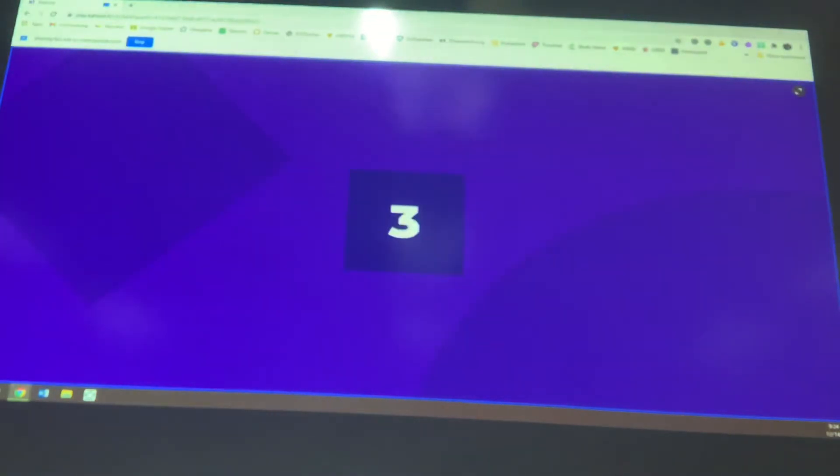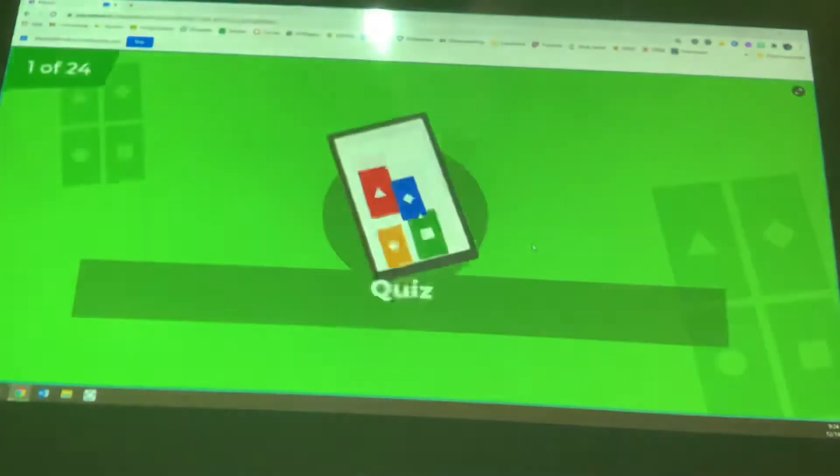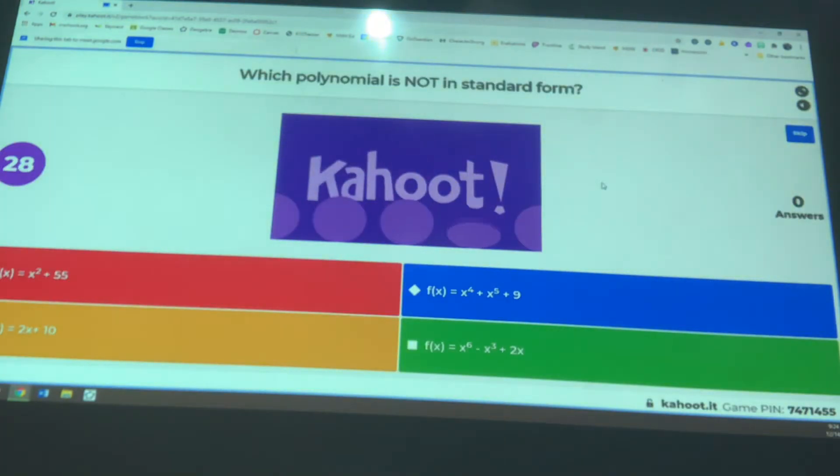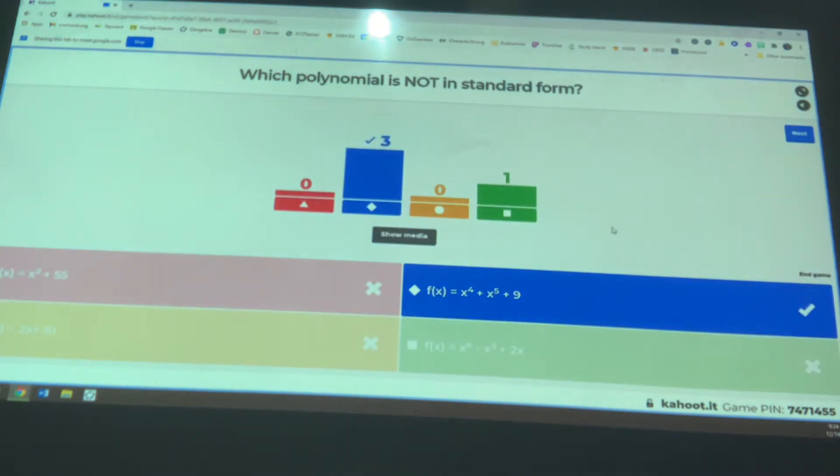Alrighty. This is review of polynomials. First question, which polynomial is not in standard form? Which one is not in standard form? Yeah, and remember standard form starts with the highest degree term and then it continues to descend. So here we see x to the fourth power plus x to the fifth power. Nope, this thing is not in standard form because that x to the fifth power, the highest degree term should be at the front. Perfect. Standard form.